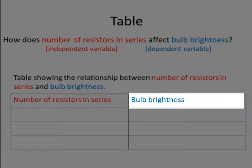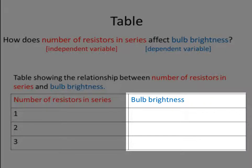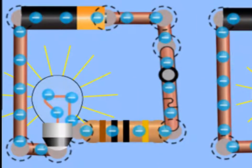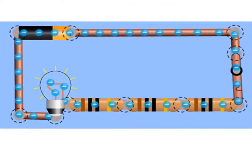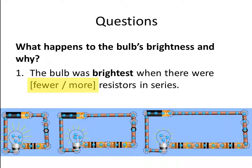The same with bulb brightness — the dependent variable does not have a unit, so we don't put anything in brackets after the heading. We are using one resistor in the first circuit, two resistors, and three resistors, so we put those values in. Now we need to fill in the relative brightness for each of these three circuits. We saw that the first circuit with only one resistor had the brightest bulb, and the circuit with three resistors in series had the dimmest bulb, so we put that information into our table.